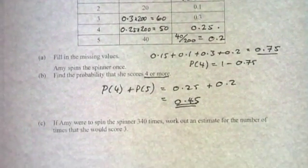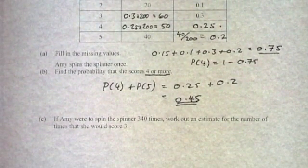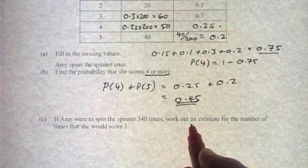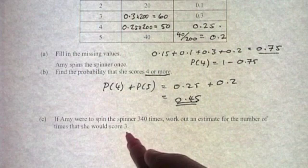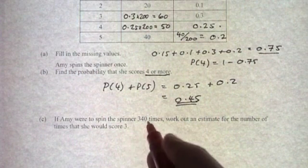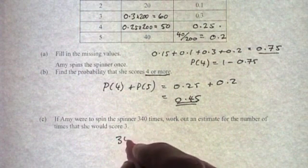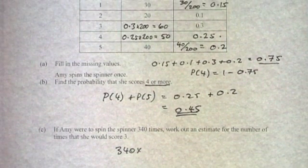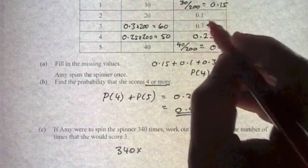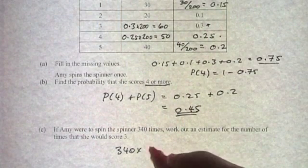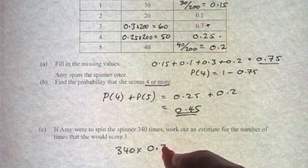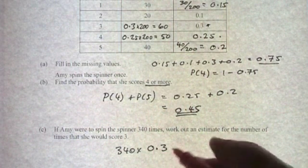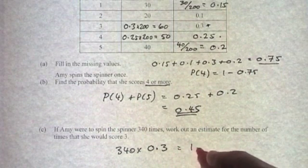The last part of this question says if Amy were to spin the spinner 340 times, work out an estimate for the number of times that she'd score 3. Well, that's just going to be 340 times the probability of scoring 3, which is 0.3. So it's 340 times 0.3, and that comes to 102.